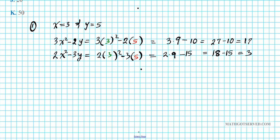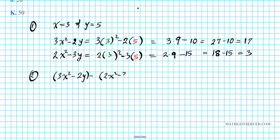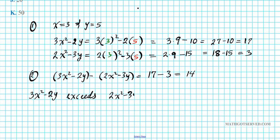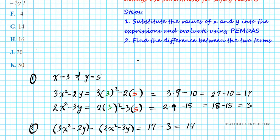By how much does the first value exceed the second? We find the difference: 17 minus 3 equals 14. So 3x² minus 2y exceeds 2x² minus 3y by 14 units. Our answer is option letter G.